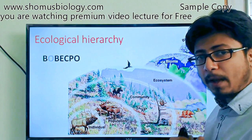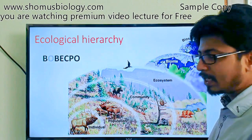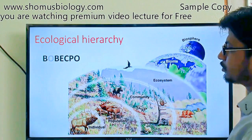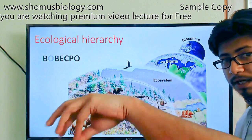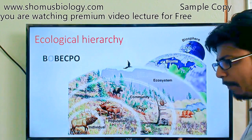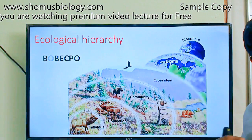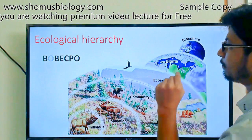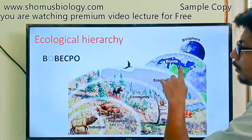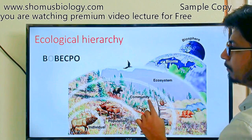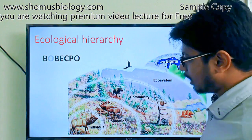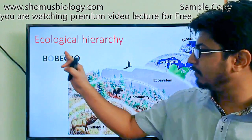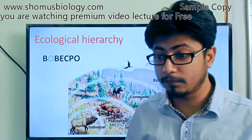Many different populations of species together form a community — cats, dogs, birds all acting together. All communities form an ecosystem, all ecosystems form a biome, and all biomes together form the biosphere. BOBEK PO stands for Biosphere, Biome, Ecosystem, Community, Population, Organism — from maximum to minimum level.